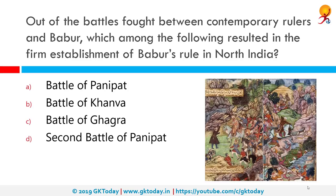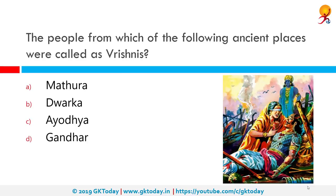Out of the battles fought between contemporary rulers and Babur, which resulted in the firm establishment of Babur's rule in North India? The correct answer is the Battle of Kanwa, fought near the village of Kanwa in Bharatpur district of Rajasthan on March 16, 1527. It was fought between the invading forces of the first Mughal Emperor Babur and the Rajput forces led by Rana Sangha of Mewar.